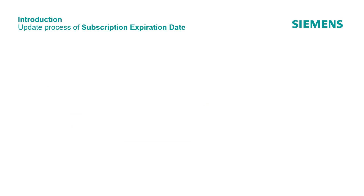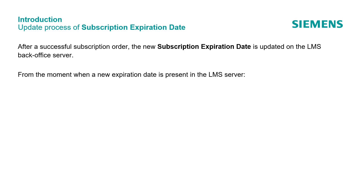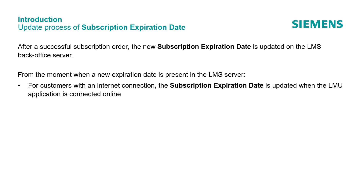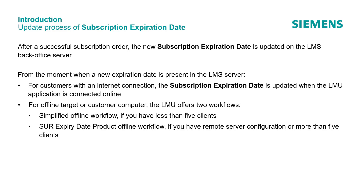How is the subscription expiration date being updated? After a successful subscription order, the new subscription expiration date is updated on the LMS back office server. From the moment when a new expiration date is present in the LMS server, for customers with an internet connection, the subscription expiration date is updated when the LMU application is connected online. For offline target or customer computers, the LMU offers two workflows: the simplified offline workflow, if you have less than 5 clients; or the SUOR expiry date product offline workflow, if you have a remote server configuration or more than 5 clients.